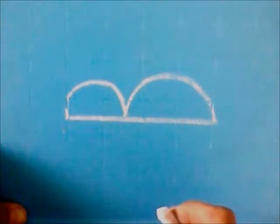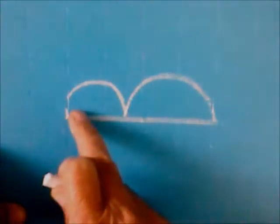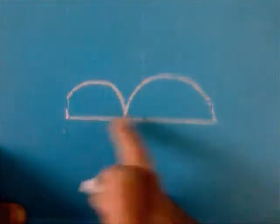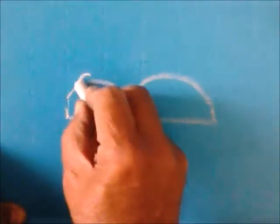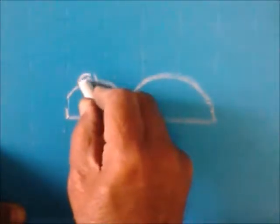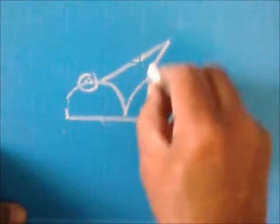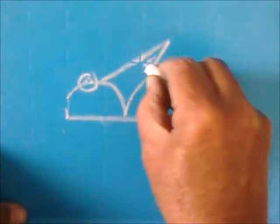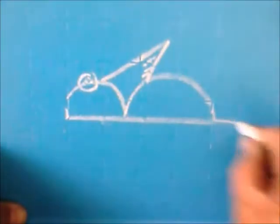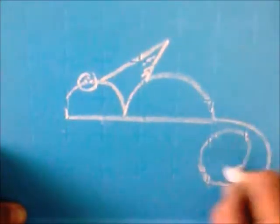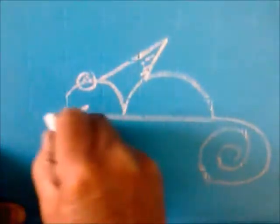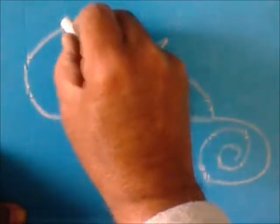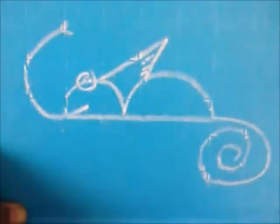To draw the visual symbol of a chameleon, begin with the structure of a lying down B. Make a small circle here, put a dot, draw a pointed line and put a few dashes. Make a spiral here to represent the tail and draw a curve with two dashes to show the tongue.